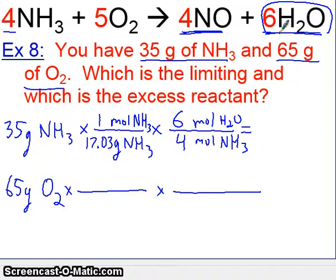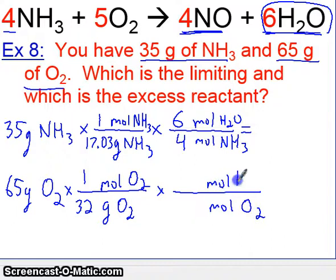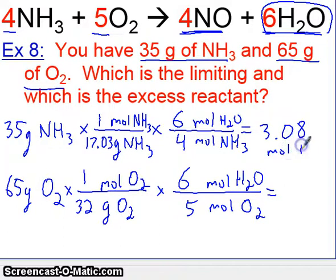Let's do the same thing for oxygen. We have grams of oxygen down here, mole of oxygen. A mole of oxygen is 32 grams. And then we have moles of oxygen down here, and then moles of the same product, water, up here. And we have six moles of water produced from five moles of oxygen. Let's go ahead and do the top calculation. We have 35 divided by 17.03 times 6 divided by 4, which gives us 3.08 moles of water.